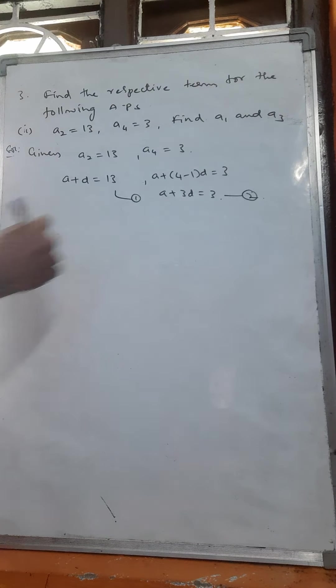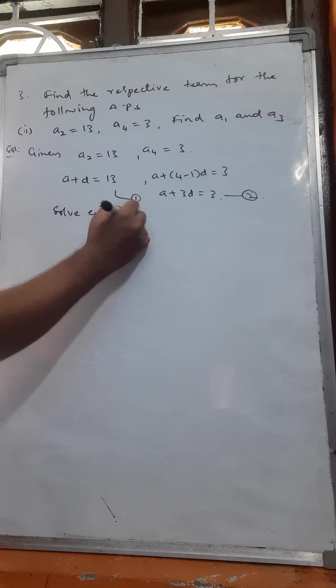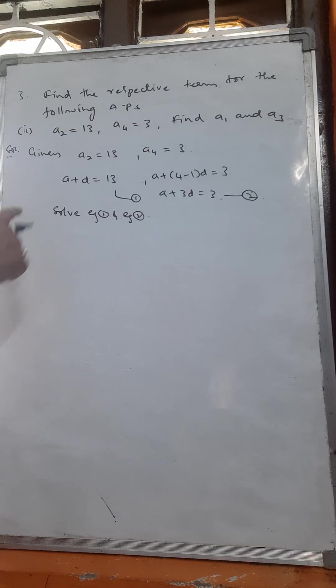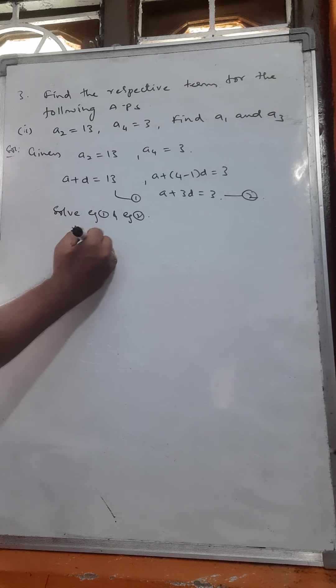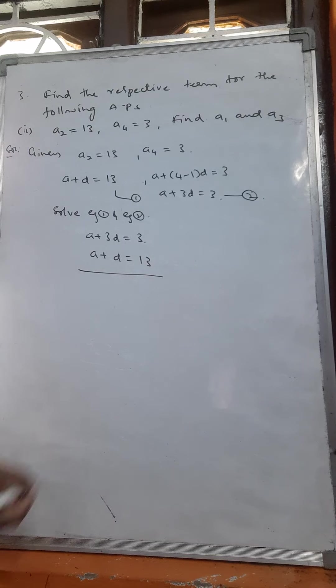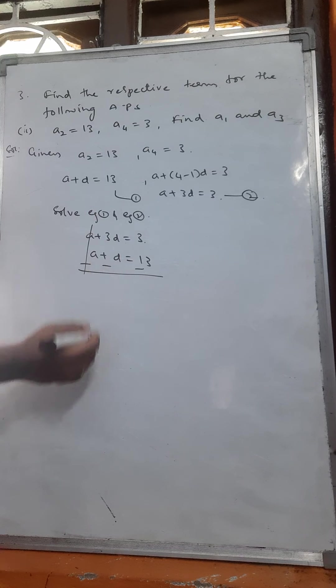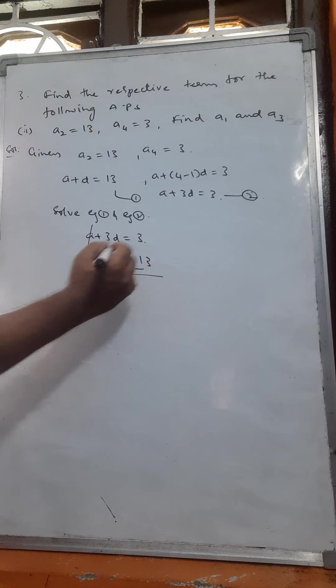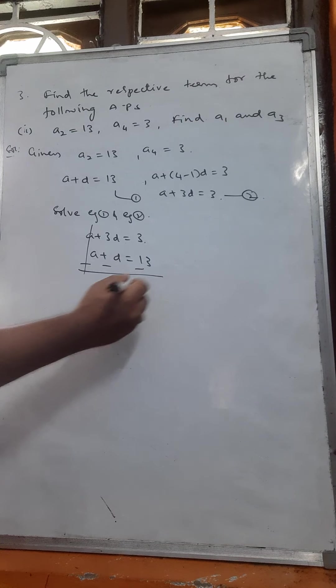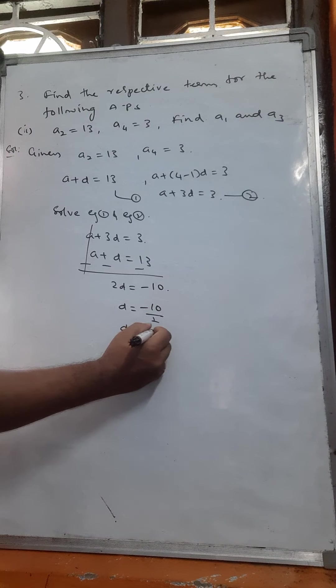Now we have to solve equations 1 and 2. We have three methods: substitution method, cancellation method, or graphical method. We are using the cancellation method. a plus 3d is equal to 3, a plus d is equal to 13. If you subtract, a will get cancelled. 3d minus d gives 2d, and 3 minus 13 gives minus 10. So d is equal to minus 10 by 2, d is equal to minus 5.